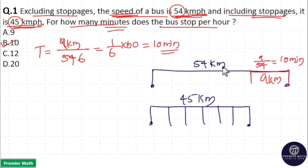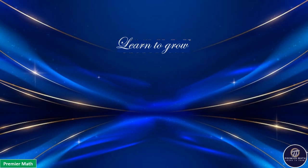So this 9 kilometers is covered in 1 by 6 hour, means in 10 minutes. So in 10 minutes, this superfast covers 9 kilometers extra, so this 10 minutes is the time taken for this slower speed bus, this ordinary bus, to cover all the stoppages.